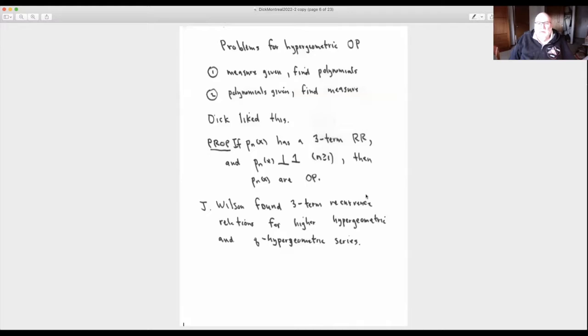So let's see, what kind of problems were we looking at back then for hypergeometric orthogonal polynomials? Problem one is, if you know the measure, can you find the polynomials? Know the polynomials, can you find a measure? Dick liked this little proposition down here. He called it a shortcut, that if you have polynomials with three-term recurrence relation, and they're all orthogonal with respect to some weight to one, you don't need to check anything else. Then the polynomials are orthogonal.